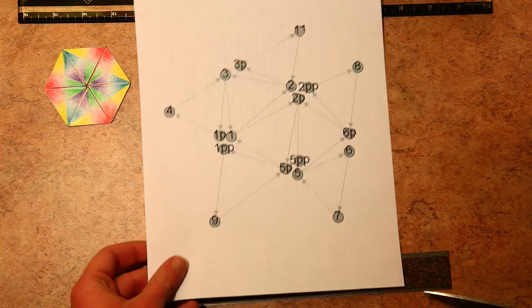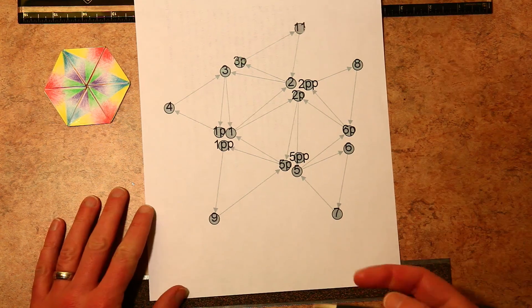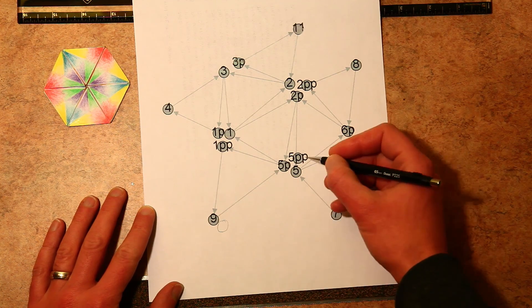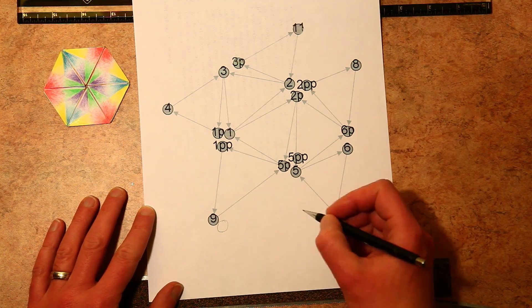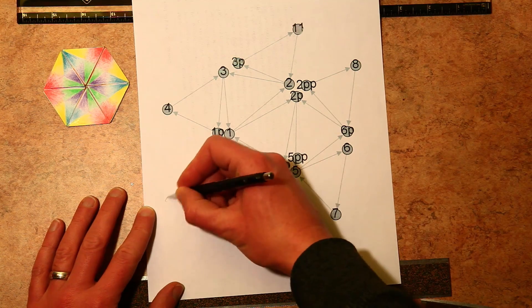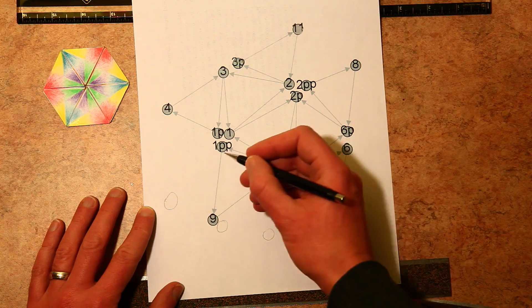And the nice thing about hexaflexagons is they have this beautiful three-fold symmetry. So from this graph, you can see that if it's not totally obvious, I don't blame you. But there's two nodes missing at the bottom here. So I'll just kind of fill those in.